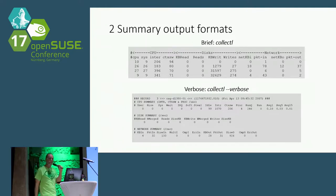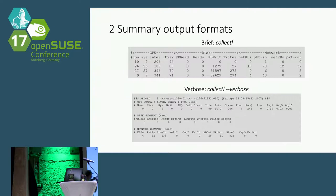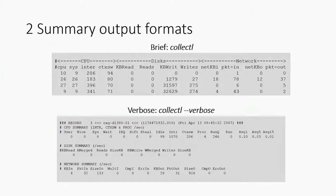Can people see that, or should I zoom in? What you're looking at here is brief format. In brief format, we're looking at the CPUs, the disks, and the network. All I'm showing for CPUs is the system and user load, and the context switches and interrupts. That's it for CPUs. For disks, I'm showing reads and writes and kilobytes, and similar for network.